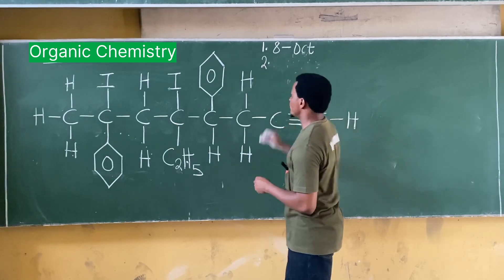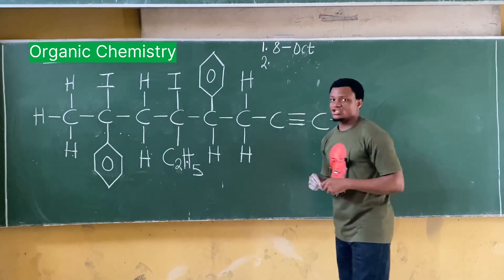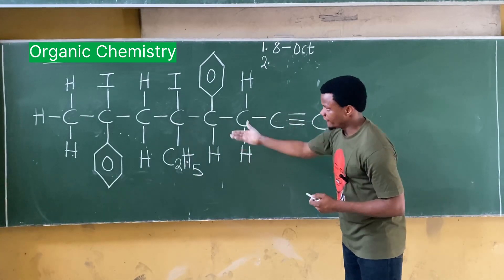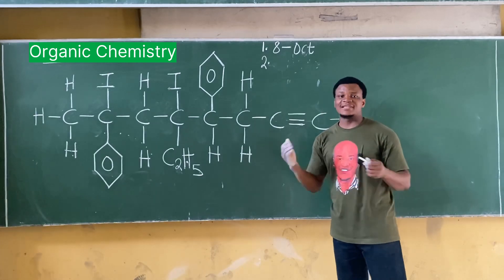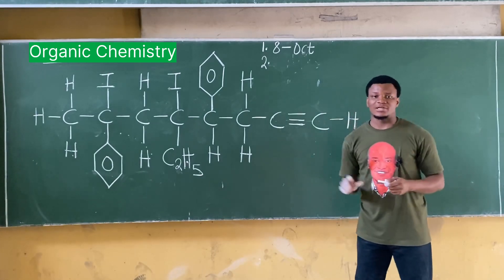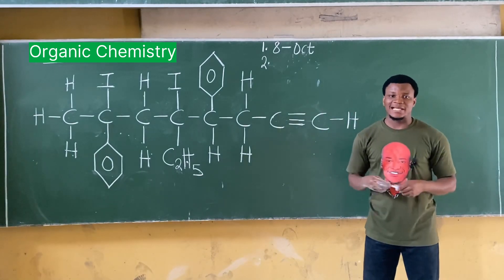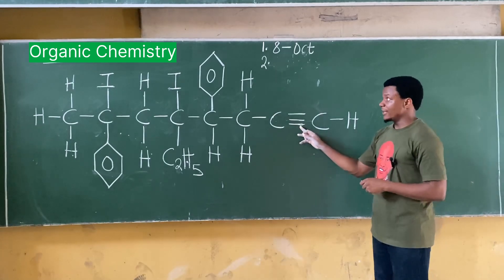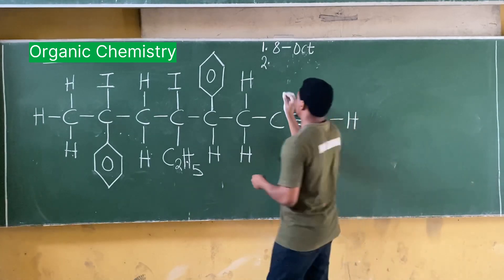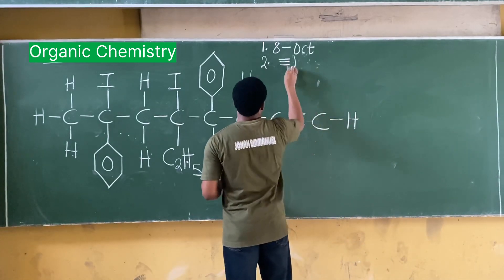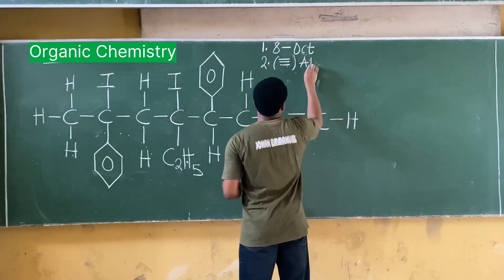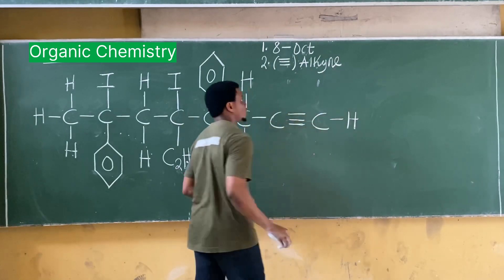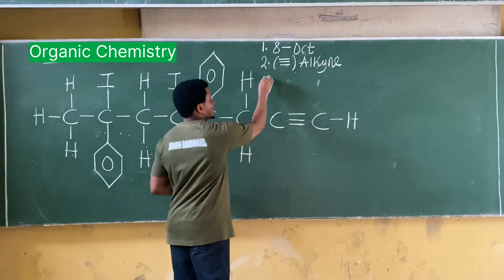For the functional group: if there's a single bond throughout it's an alkane, a double bond is an alkene, and a triple bond is an alkyne. I have a triple bond here, so the functional group is a triple bond, which makes this an alkyne. That's the second rule.